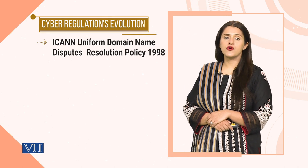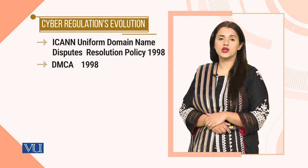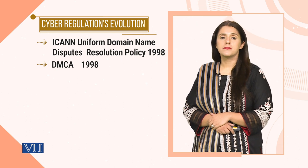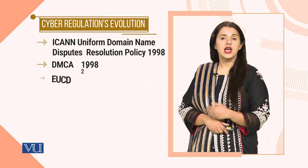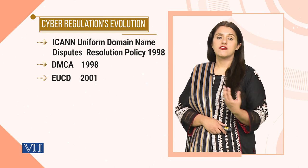Moving from efforts by WIPO and the United Nations, in 1998, the Internet Corporation for Assigned Names and Numbers, ICANN, gave the Uniform Domain Name Dispute Resolution Policy in the U.S., helping implement WIPO's copyright rules and treaty. The Digital Millennium Copyright Act, DMCA, enacted in the U.S. in 1998, further extended those copyright rules and treaty. Similarly, the European Copyright Directive, EUCD, was implemented in 2001, also helping implement WIPO's copyright rules and treaty.